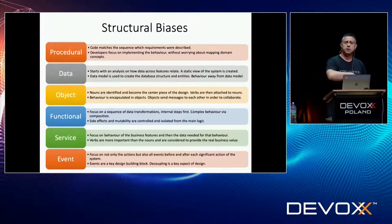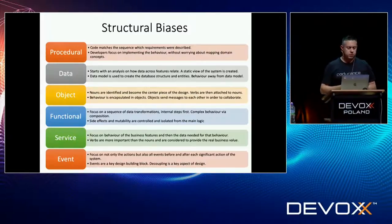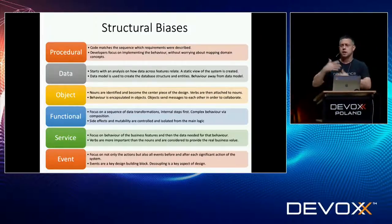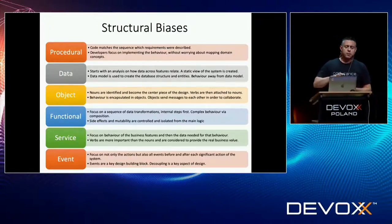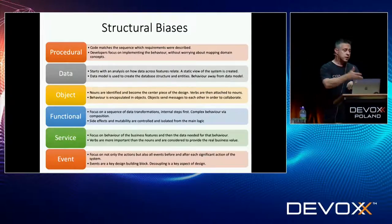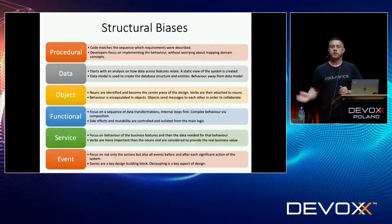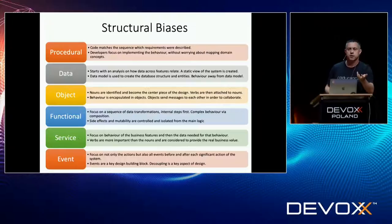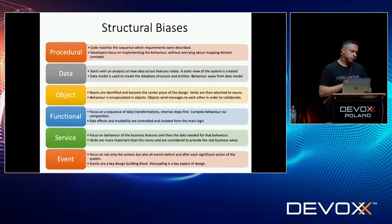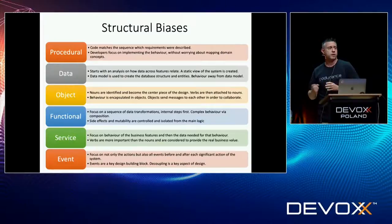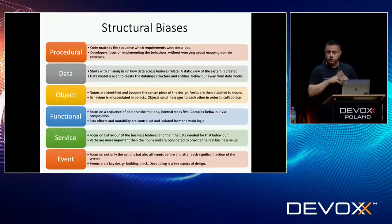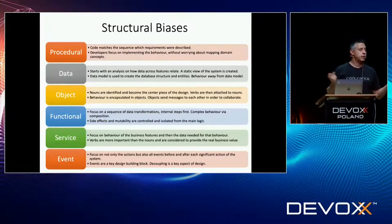On the functional style, you think about a series of transformations — you go from smaller modules, compose them into more complex modules, and isolate side effects and I/O. On the service style, you focus on behavior first; similar to functional, you move away from entities and treat everything more as a data structure. With event-driven design, events become the centerpiece of your domain, and the focus is on decoupling — making things decouple.